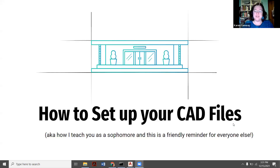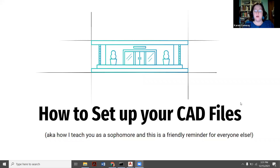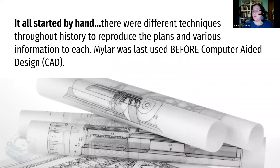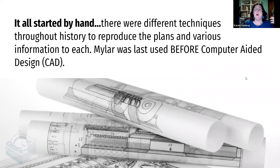I want to go over briefly the history of why we do this and what you might run into out in the field — why you're going to do it a little differently. As I mentioned, when you worked with me as a sophomore in ISD 101, we were talking about drawing and drafting by hand, which is the history of how architectural drawings were done.